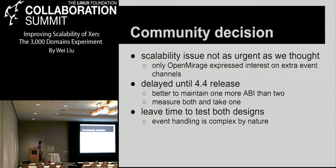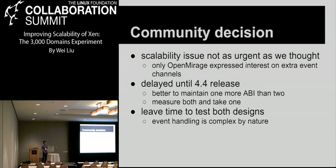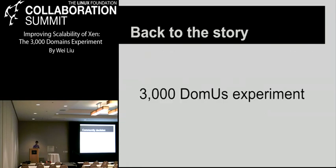The community decision is that this scalability issue is not as urgent as first thought — only the OpenMirage project expressed real interest in an expanded event channel. The decision is to delay this until the 4.4 release because maintainers think it's better to maintain one new ABI rather than two. By that time, both solutions can be measured and the better one chosen. Event handling is complex by nature, so it's better to have time to test both designs.